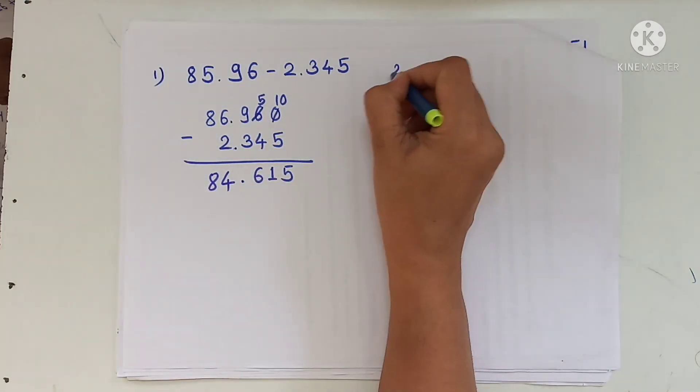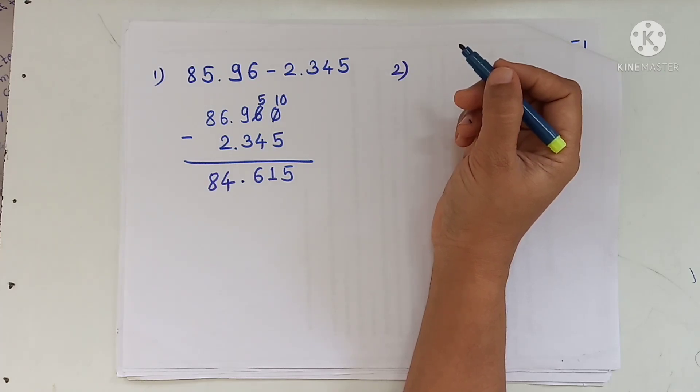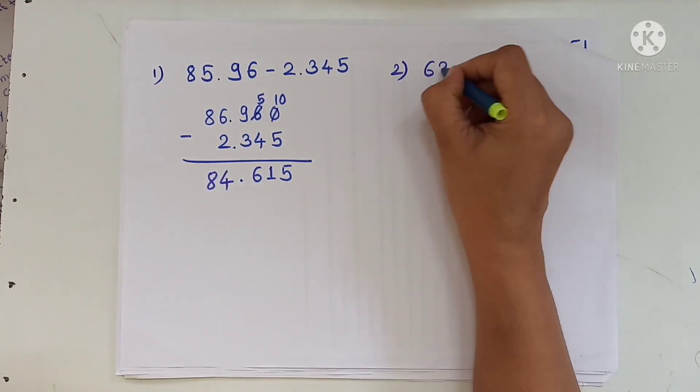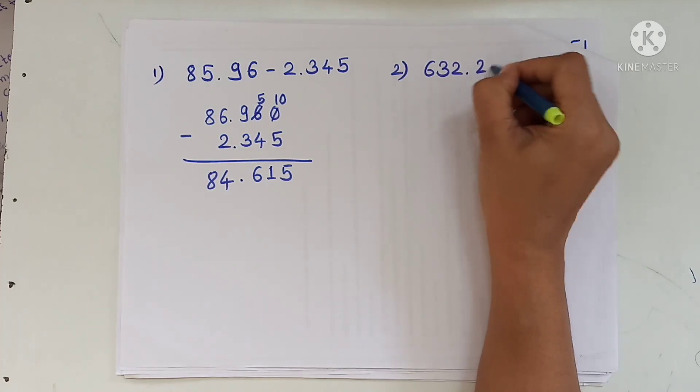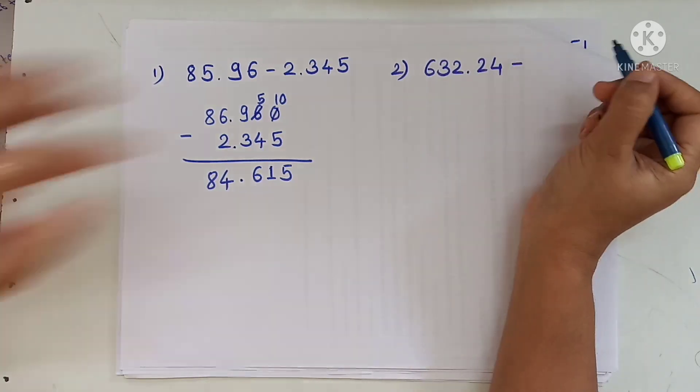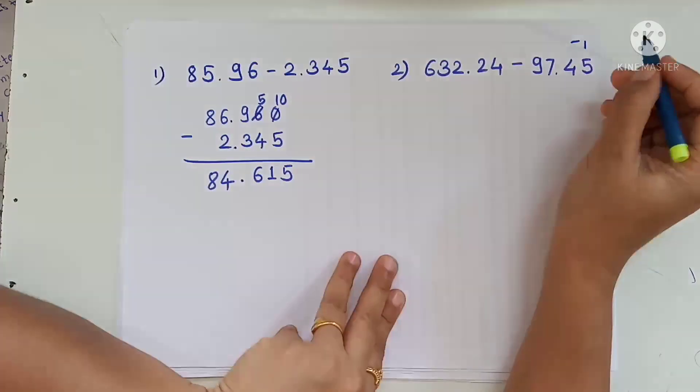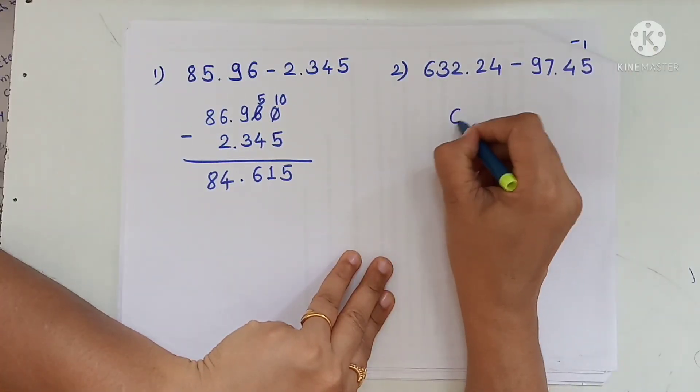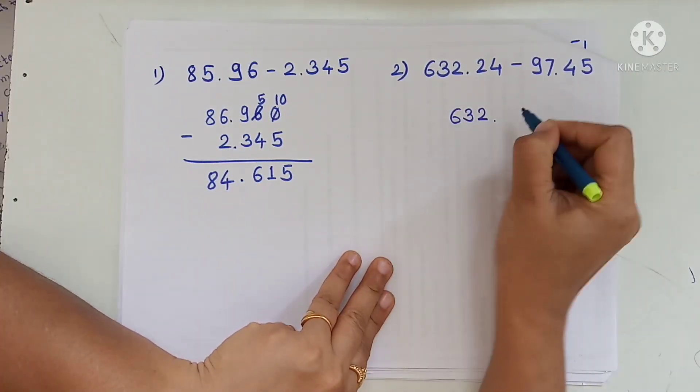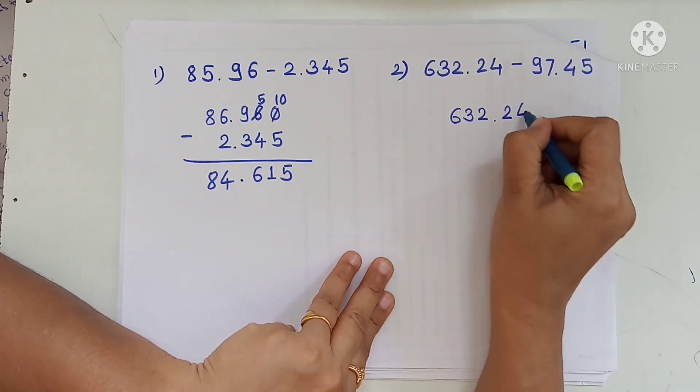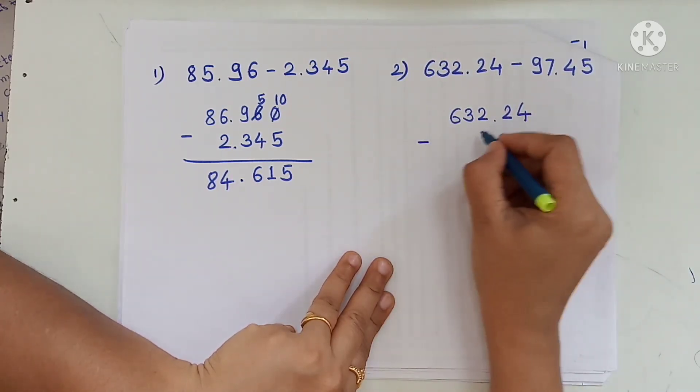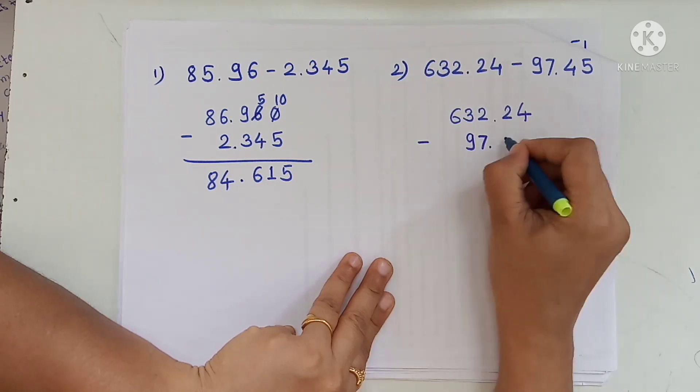Then second example, 632.24 minus 97.45. Arranging this vertically.